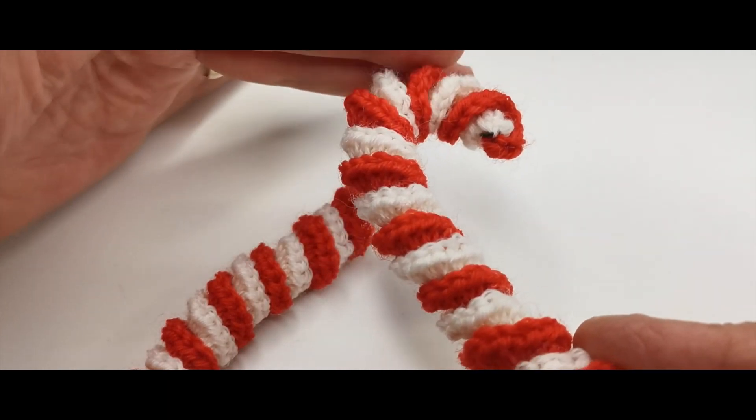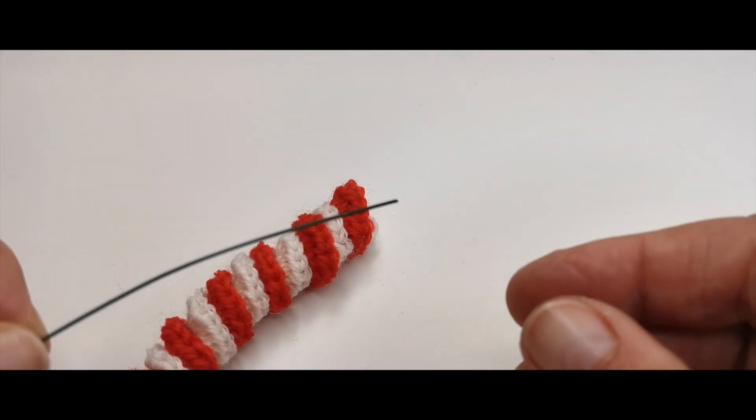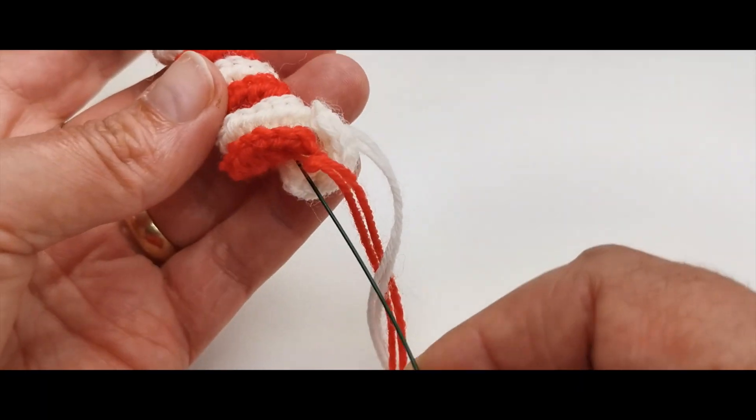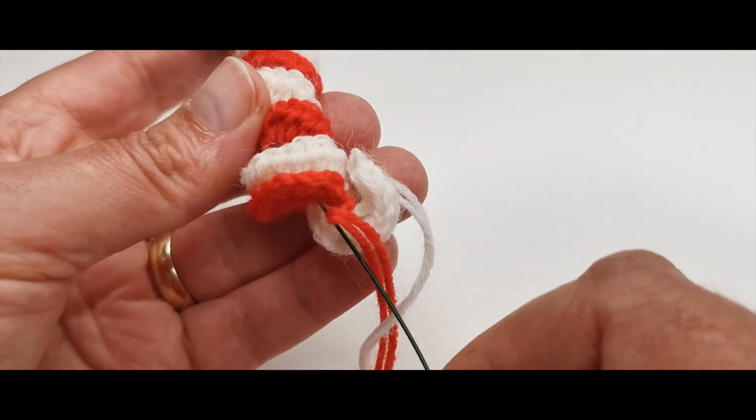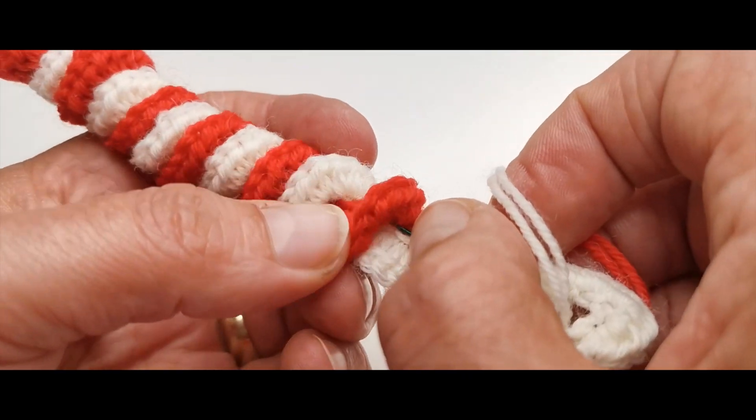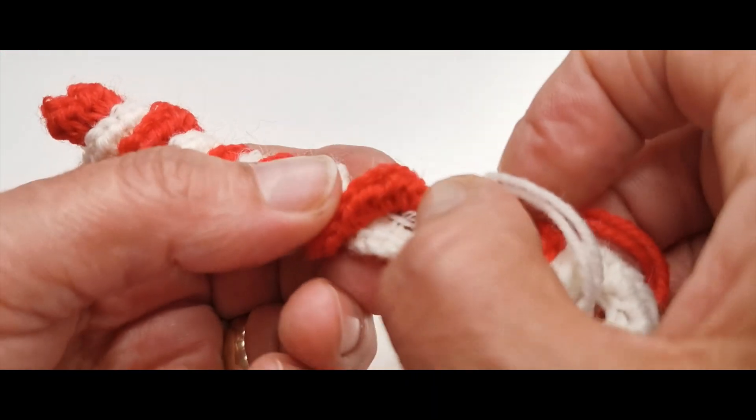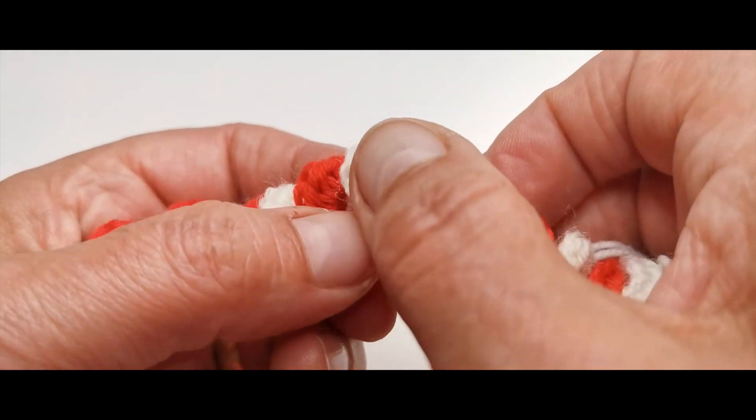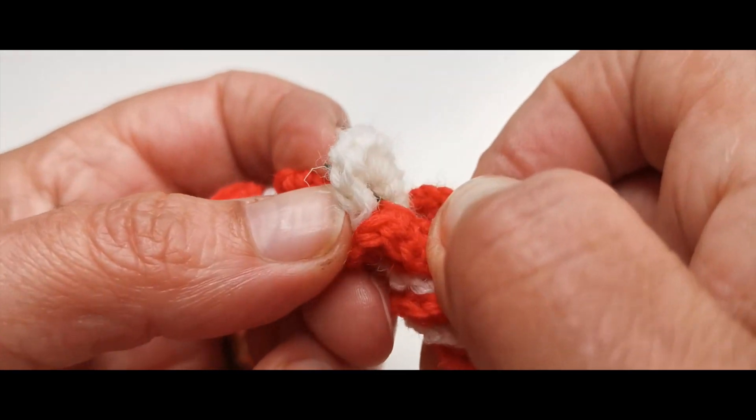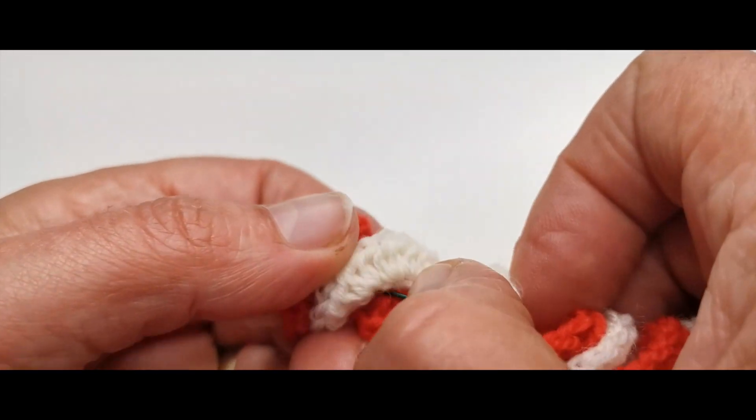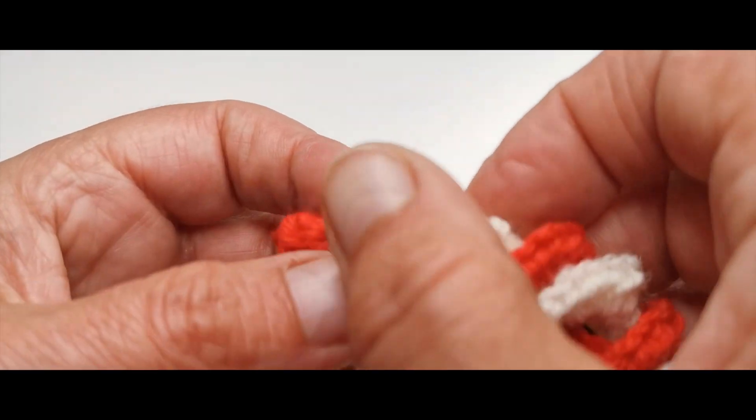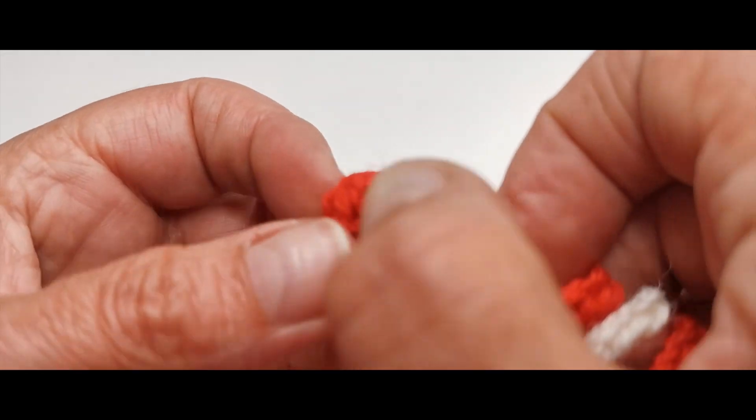Und damit dieser Bogen hier stabil drin bleibt, kommt jetzt der Blumendraht ins Spiel. Und den fädeln wir jetzt oder den Pfeifenreiniger in der Mitte oder in die Mitte unserer rot-weißen Kringeln. Wie du siehst, der ist da mittendrin. Immer weiter auffädeln. Bis ganz nach oben.